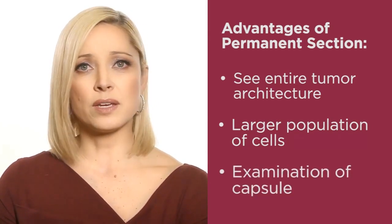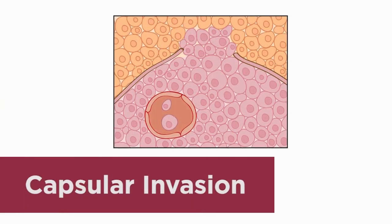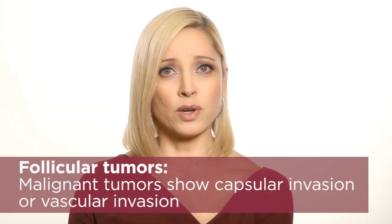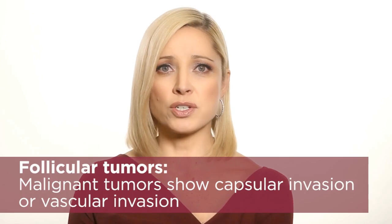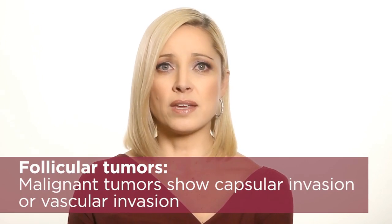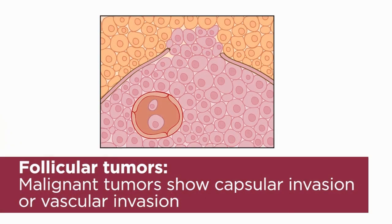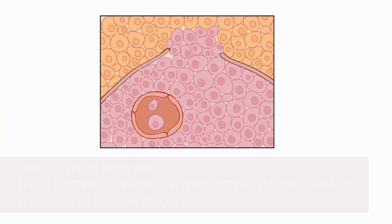This more detailed evaluation includes an examination of the capsule of the tumor. When the tumor cells have grown into or through the capsule, it is called capsular invasion. In tumors defined as follicular tumors, the only way to distinguish benign — known as an adenoma — from malignant — known as follicular carcinoma — is by identifying whether capsular invasion is present or whether there is evidence of cancer cells growing into blood vessels within the tumor, known as vascular invasion. The presence of capsular and vascular invasion cannot be determined by looking at individual cells on a fine needle aspiration.